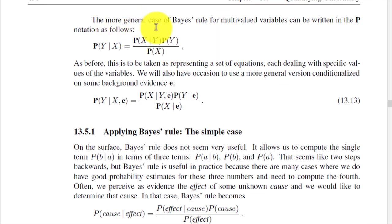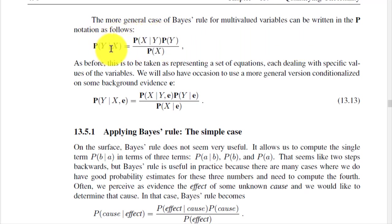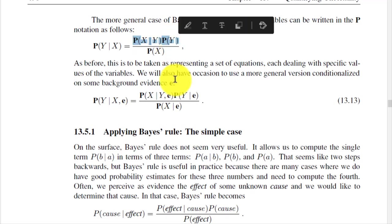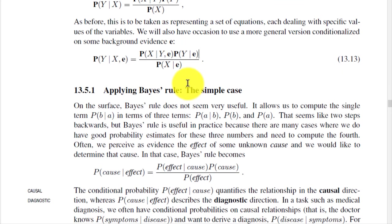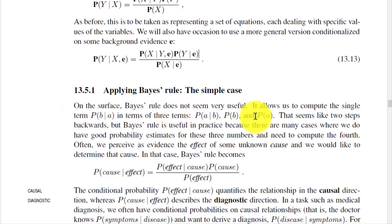The more general case of Bayes' rule for multi-valued variables can be written using vector notation. On the surface, Bayes' rule does not seem very useful — it allows us to compute P(B|A) in terms of three terms: P(A|B), P(B), and P(A), which seems like two steps backward.